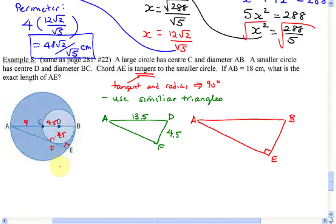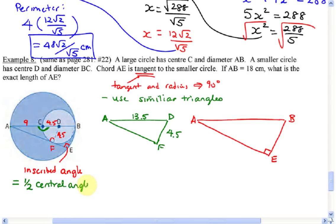We know angle F is 90 degrees from the tangent. Why is angle E also 90 degrees? It's not tangent — E is on the larger circle. It's because AE is a chord and angle AEB is an inscribed angle. An inscribed angle is one that touches the edge of the circle, and the inscribed angle is always equal to half the central angle. The central angle ACB is 180 degrees, so the inscribed angle is half of 180 — that's 90 degrees.